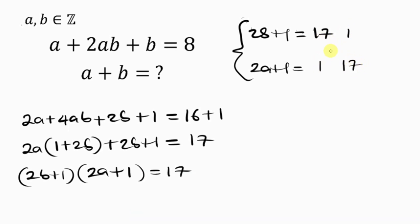These are the positive factors of 17. Remember, 17 is a prime number. Now, the negative factors of 17 are: negative 17 times negative 1 and negative 1 times negative 17. So, this is what we're going to be working with.